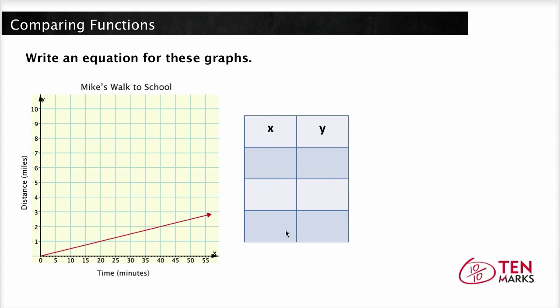So you can do this by using a table right here. The graph starts at the origin. So one point is 0, 0. This means that Mike has walked 0 miles in 0 minutes. This is his starting point. Now another point on the graph 20, 1 shows that after 20 minutes Mike has walked 1 mile. Let's look for one more point. Let's pick 40, 2. So in 40 minutes Mike has walked 2 miles.